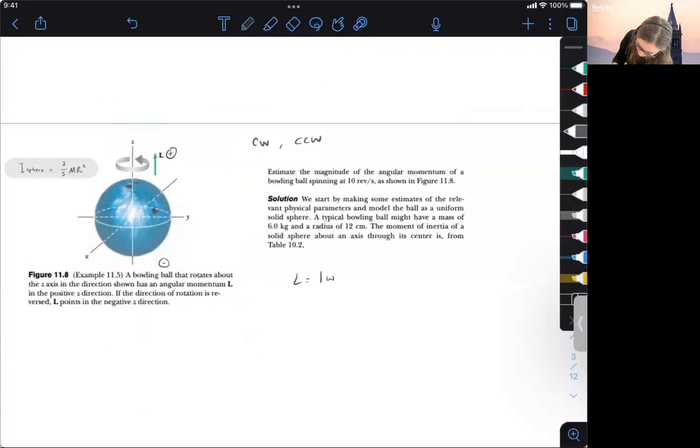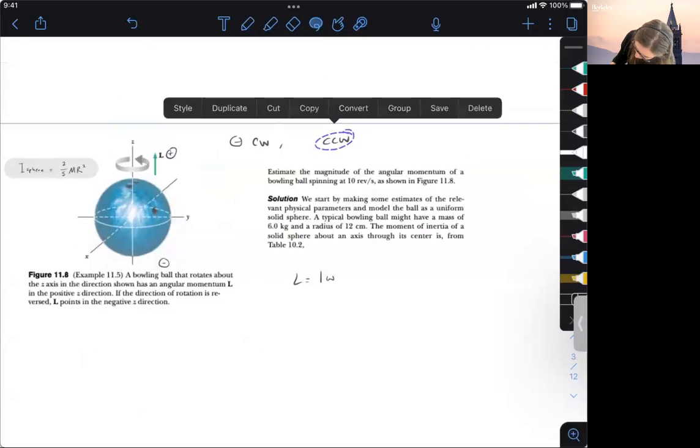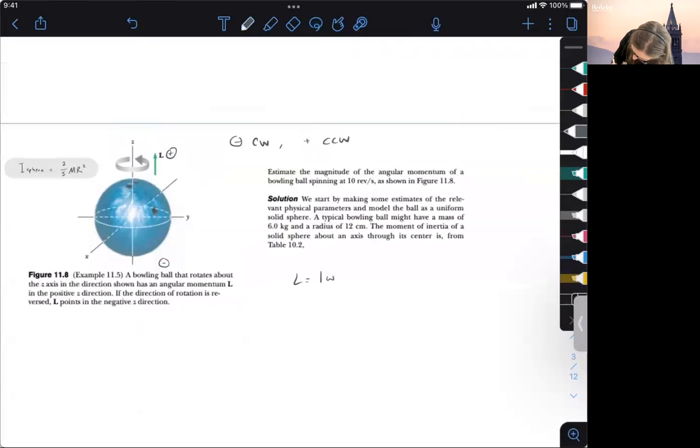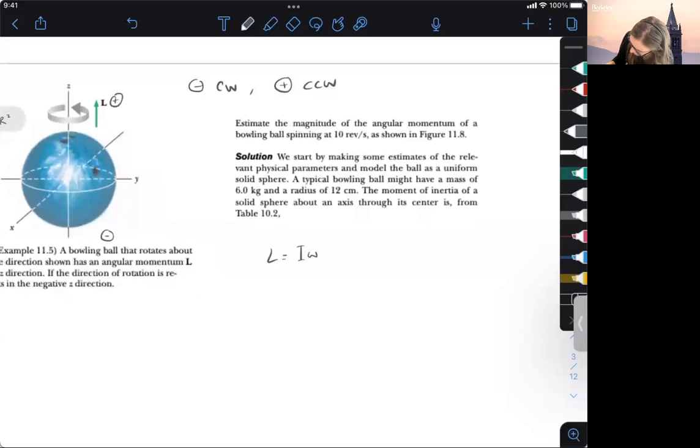So just kind of note that. Counterclockwise is negative, and then counterclockwise is positive. So this also applies to angular momentum, just by convention here. Okay, so let's see here. So we just want to make an estimate. So in this problem, this one's really simple.